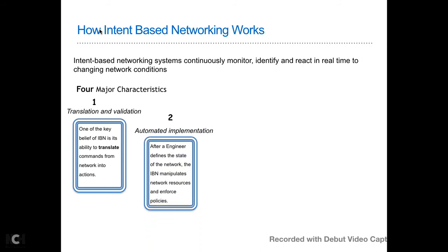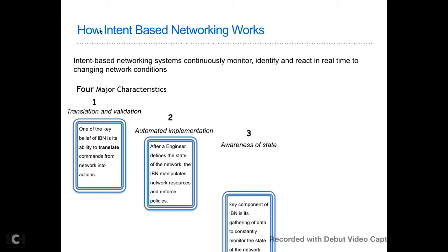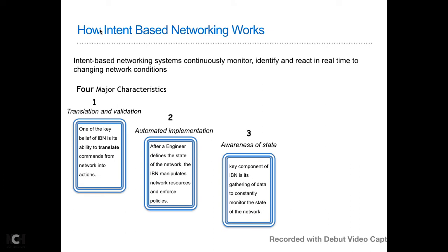The third pillar is awareness of state. Data gathering in an intent-based networking system is one of the key factors — it continuously monitors the state of the network so that it is always aware of what is happening. The fourth pillar is assurance and dynamic reaction. Intent-based networking constantly ensures that the desired state of your network is maintained, using machine learning to choose the best way to implement or maintain that desired state.